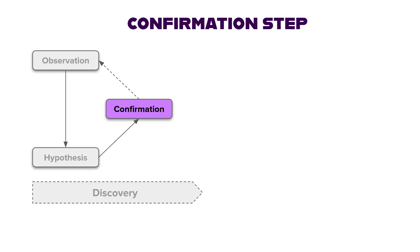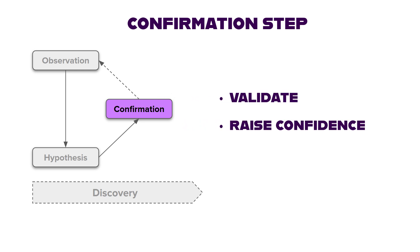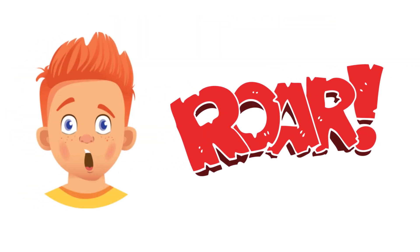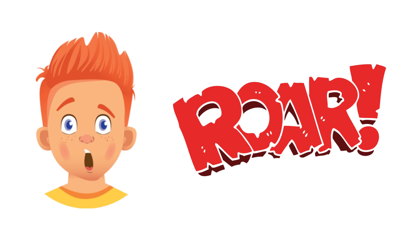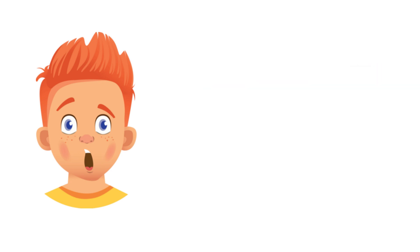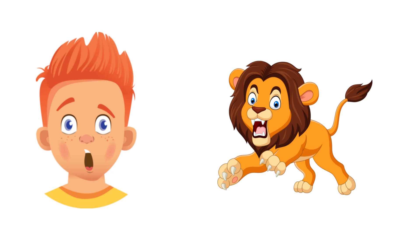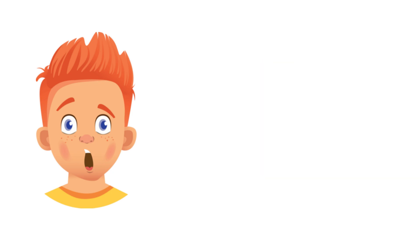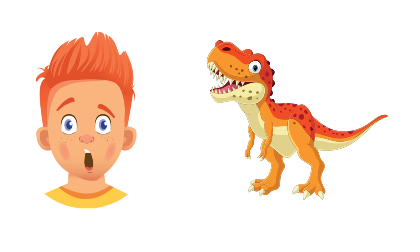In the last step of the Discovery stage, we attempt to validate or raise confidence that we correctly identified the message the child is intending to send. Carlos would aggressively roar at us and other children. We knew he liked animals and formed a hypothesis that he was pretending to be an animal. We asked Carlos if he was an animal, but got no reaction. We tried a more specific hypothesis and asked if he was a dinosaur, and were met with excited laughter and roaring confirmation. We were now confident that we got it right.